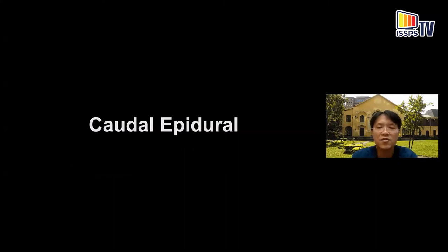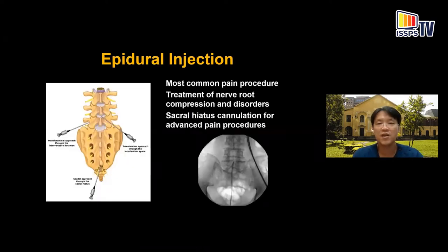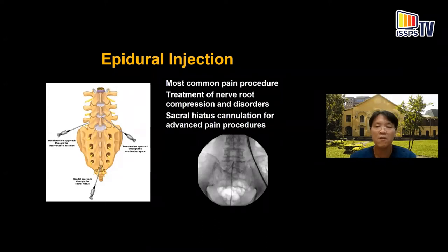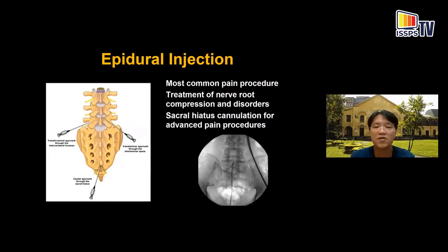The first topic is caudal epidural. Many anesthesiologists, especially those dealing with pediatric patients, are very familiar with the technique. But for pain management, epidural injection is the most common pain procedure. Caudal entry is the entry portal for most of the advanced techniques, like when we're going to do the racz catheter for failed back surgery syndrome. So the sacral hiatus cannulation is the entry portal, and it's one of my favorite procedures to perform.